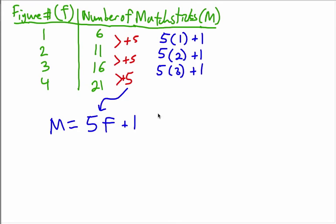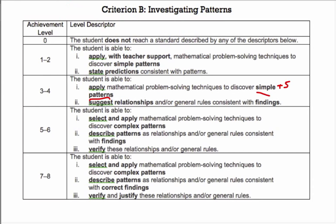So this looks like our rule: M = 5F + 1. This tells us how to get the number of matchsticks if we know the figure number. Next, according to our rubric, we are going to verify these relationships or rules. To verify it, we're going to show that it's true, and we're going to do this for at least two cases.